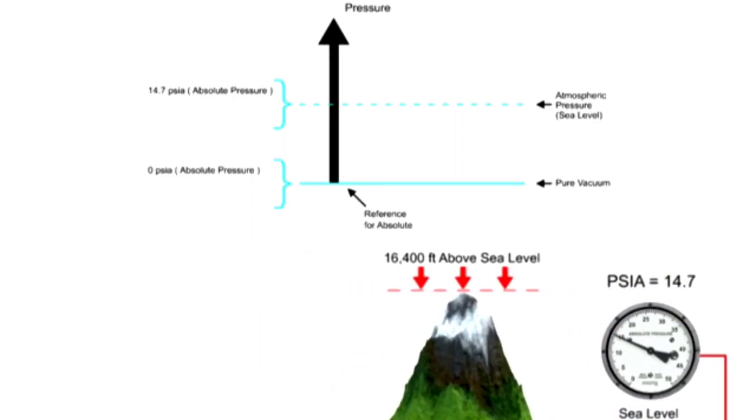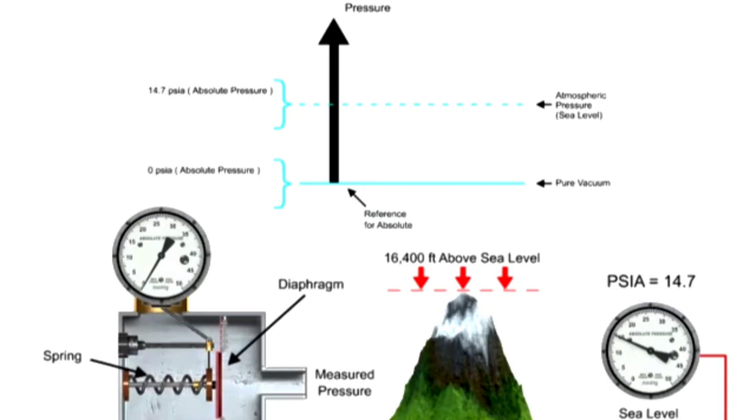A common method to measure absolute pressure is a mechanical diaphragm gauge. The diaphragm is a flexible membrane that flexes when exposed to pressure. On the opposing side of the diaphragm is the reference pressure, which is vacuum for absolute pressure.